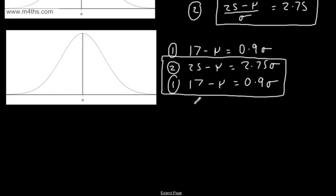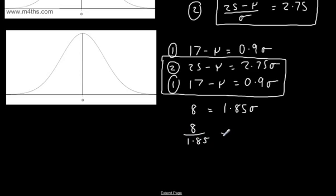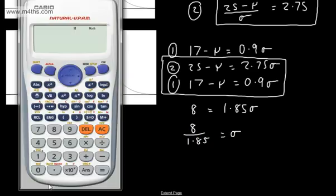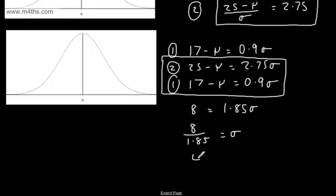Subtracting downwards gives 8 on the left, and on the right the mu terms cancel, leaving 1.85 lots of sigma (since 2.75 minus 0.9 = 1.85). So 8 divided by 1.85 equals sigma. Calculating that: 8 divided by 1.85 gives sigma = 4.32, correct to 3 significant figures.